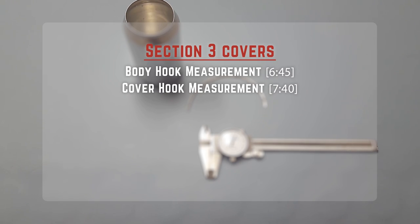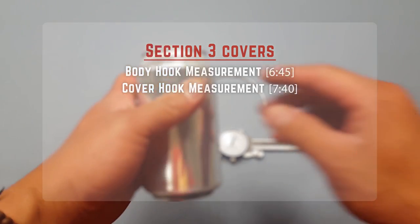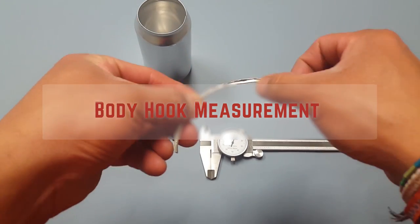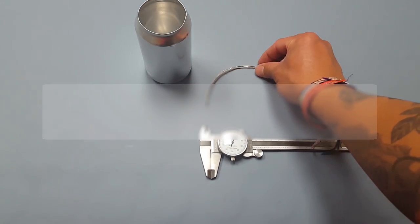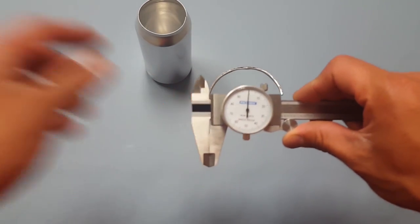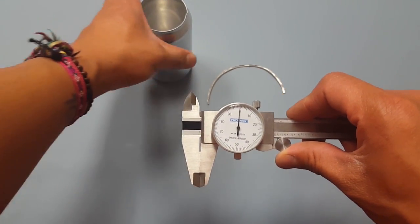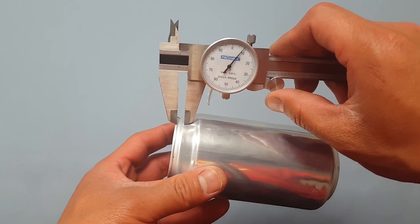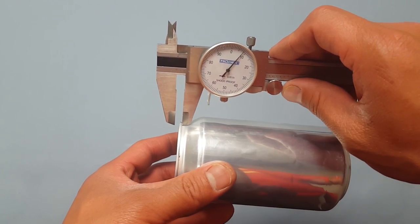Once you have torn your can down, you're left with your body hook and your cover hook. You'll need to grab your veneer calipers again, grab your can, and do the exact same thing you did with your final can seam height.